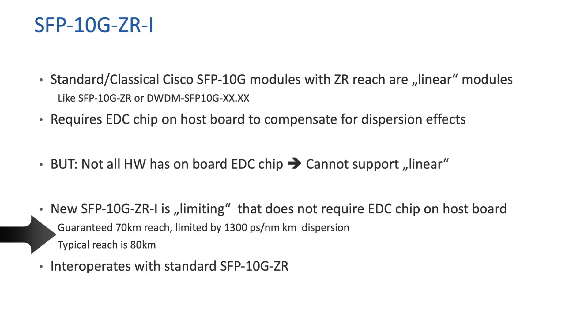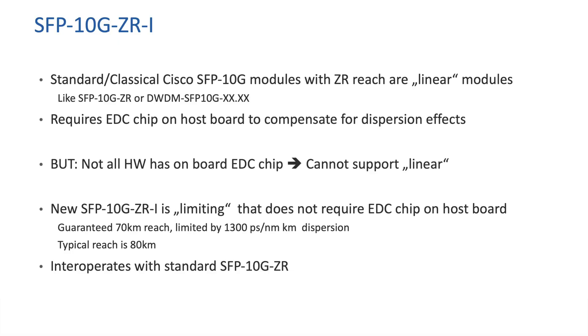There is only one small caveat: the guaranteed reach for these 10GB ZR-I is not 80km, it is 70km. That is linked to the maximum dispersion that these units can compensate, using the maximum dispersion that a fiber can have per datasheet. Under typical applications, you can expect 80km reach easily. But when going strictly by the datasheet of the optical fiber and the optical module, we can only guarantee 70km. Please take a look at the compatibility matrix, and see you next time for the upcoming 7.4.1 release. Thank you very much.